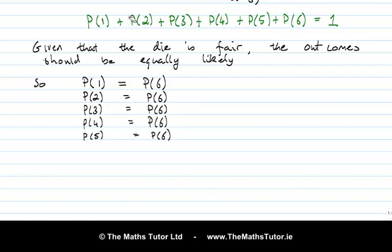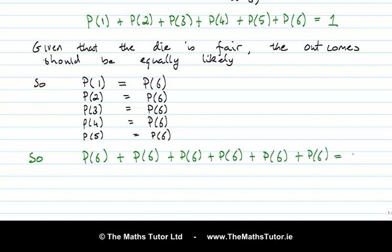This means that in the equation written in green, there aren't really 6 unknowns — all of these unknowns are actually the same, so there's just one unknown. We can replace each probability with the probability of 6. The equation becomes 6 times the probability of 6 equals 1. Dividing by 6, we get that the probability of a 6 is 1 over 6.